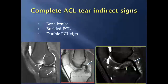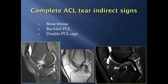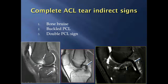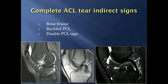There are a couple of indirect signs to help improve accuracy for diagnosing a complete ACL tear. One is a pair of bone bruises in the weight-bearing portion of the lateral femoral condyle and the posterior aspect of the lateral tibia — the classic pivot shift bone contusion pattern. If the tibia stays anteriorly subluxed, it can cause a buckled PCL. Another is the double PCL sign, where the ACL lays flat following a similar arch as the PCL, indicating it has completely torn.